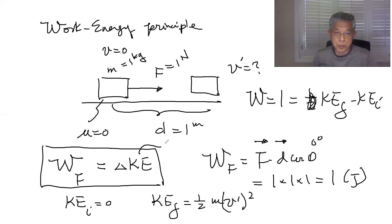So this is equal to KE final minus KE initial. So then that's equal to one half m v prime squared and minus zero because v was initially zero. So then this is equal to one half times one times v prime squared. So then v prime squared is equal to two. So then v prime is going to be equal to square root two meter per second. So that is your simple version of work energy principle.